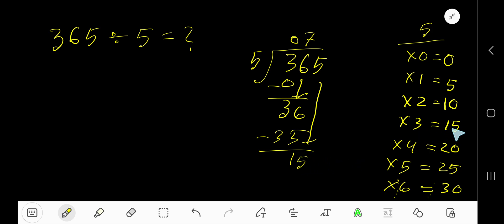5 goes into 15 how many times? 3 times. 3 times 5 is 15. Subtract to get 0 as our remainder. We are done, so 073, that is 73, is our answer.